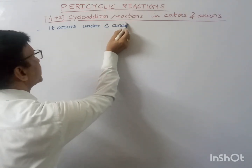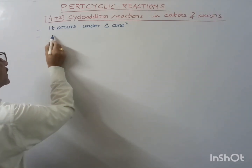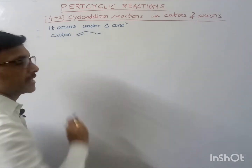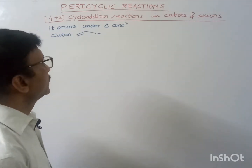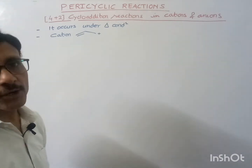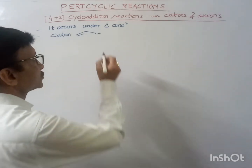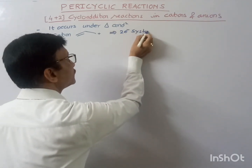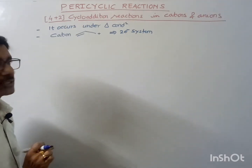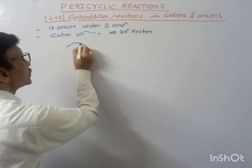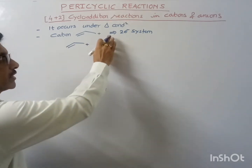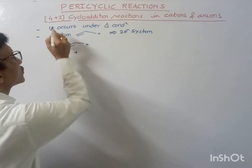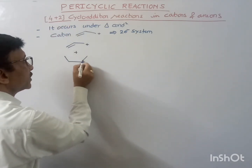If we take the cations here, I may take the cation like allylic cation. So this allylic cation may undergo 4 plus 2 cycloaddition reaction with some 4-electron system. So this is a 2-electron system. If this undergoes 4 plus 2 cycloaddition reaction, suppose we have this 2-electron system — that is the cation — and it may undergo 4 plus 2 cycloaddition reaction with a butadiene.